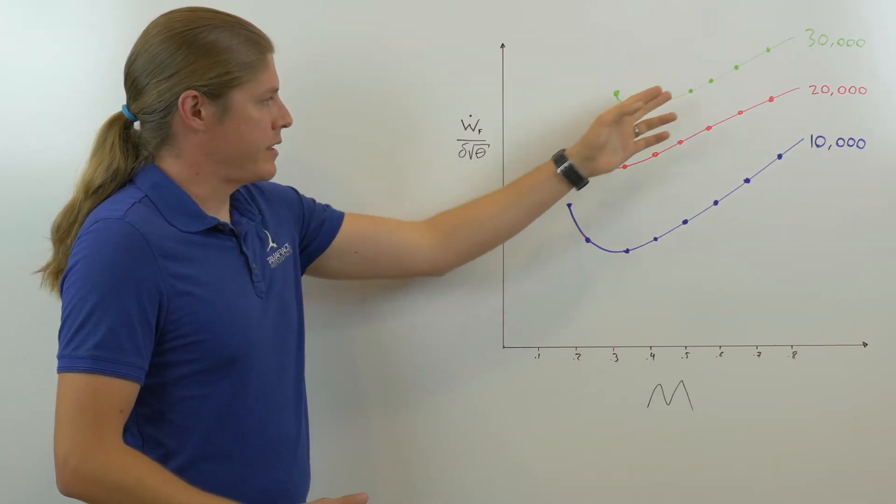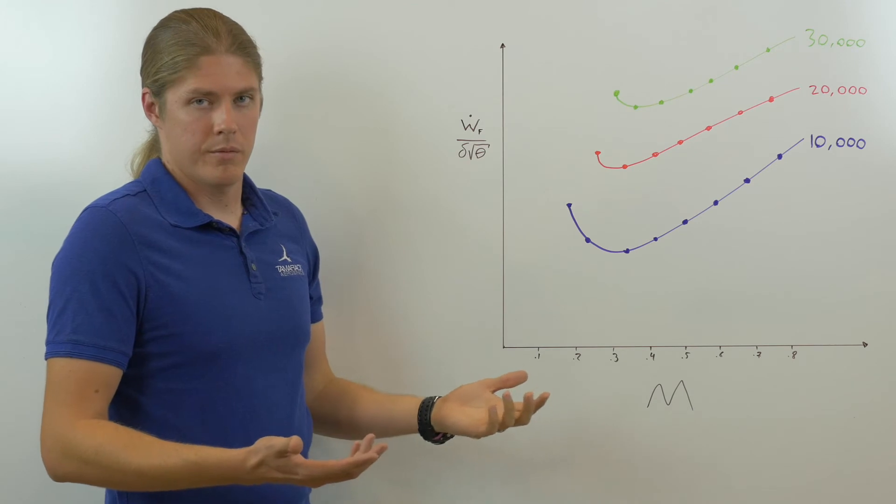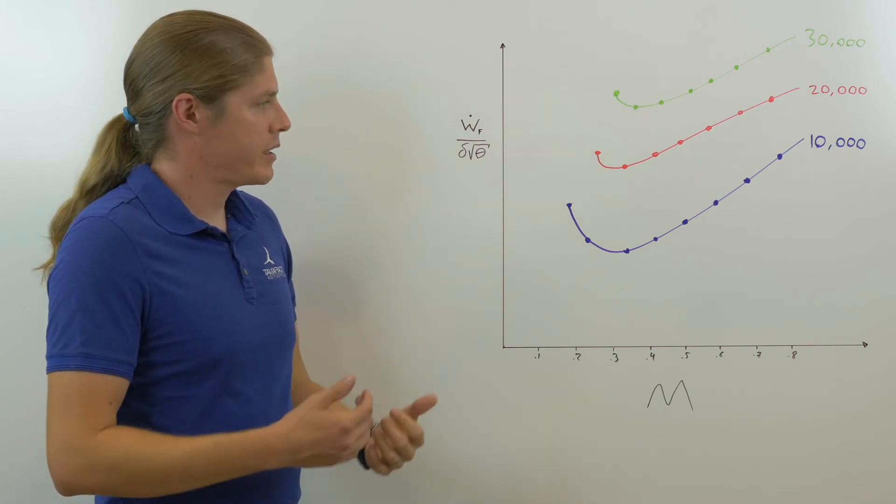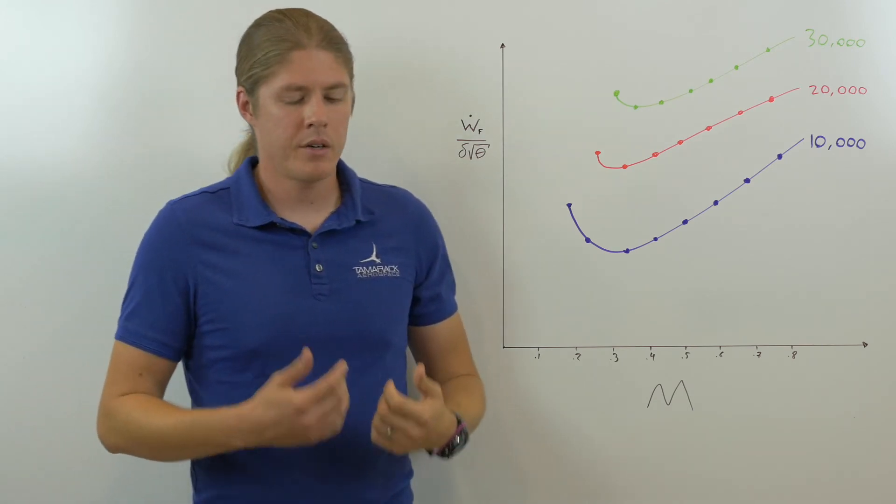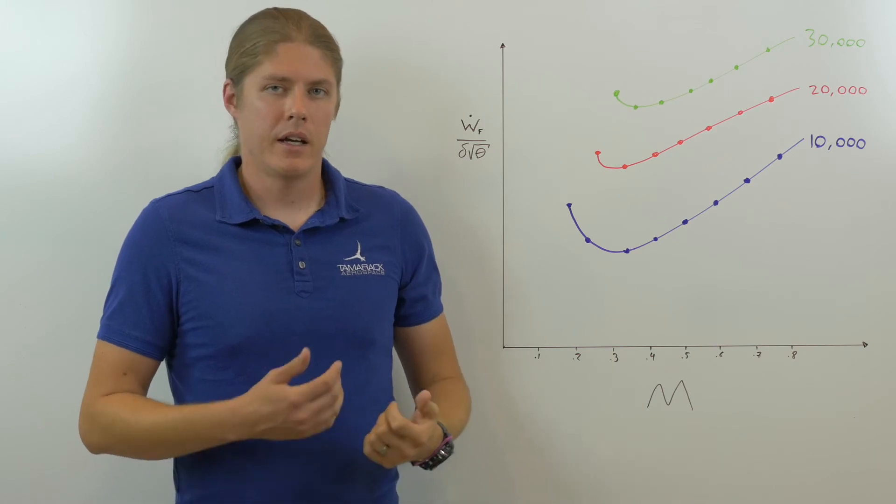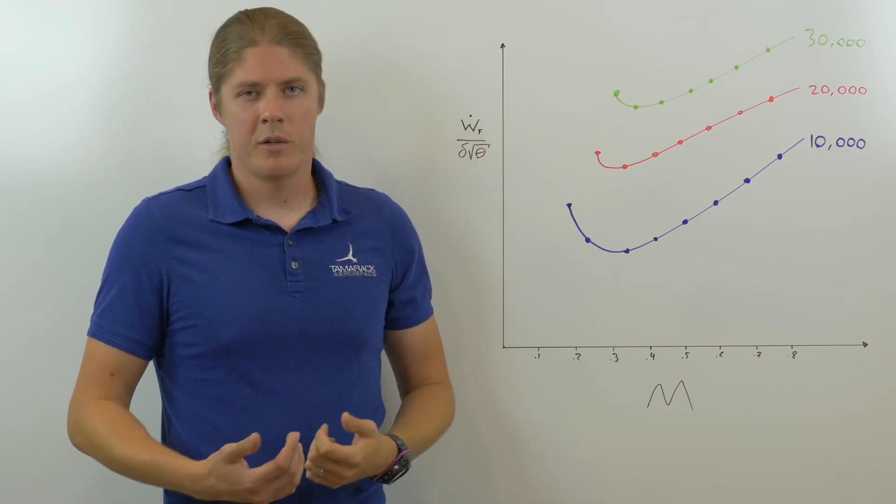If we interpolate between these, as we can from test data, we can construct a relationship that describes every W over delta for the airplane at every Mach number and reliably predict the fuel flow.